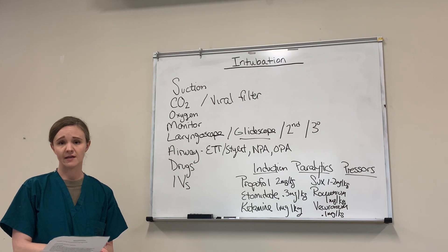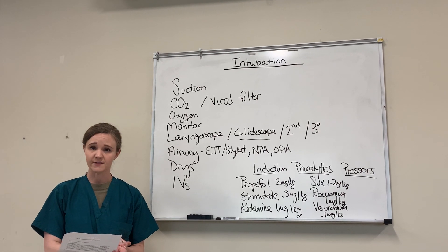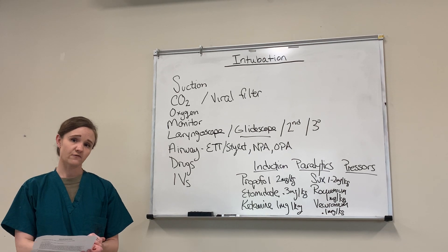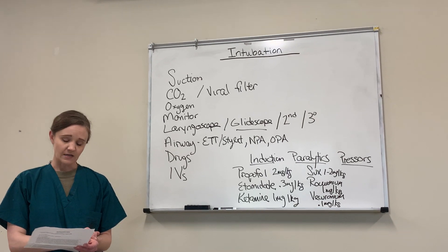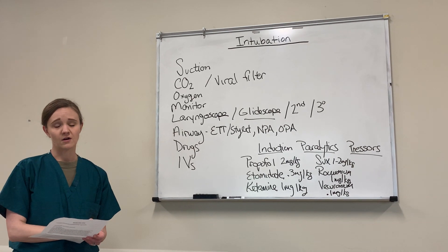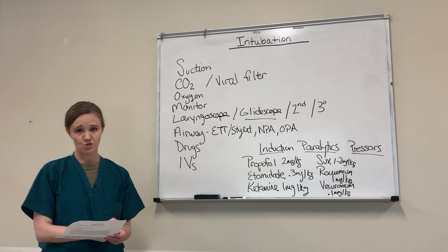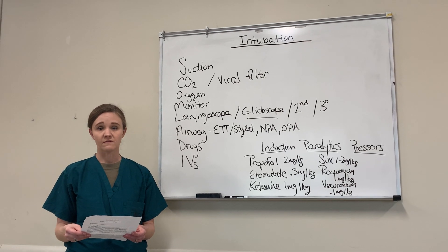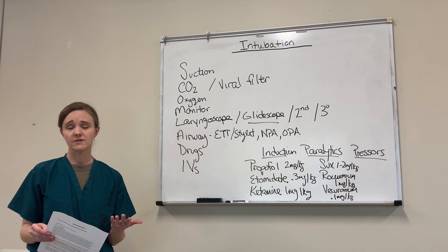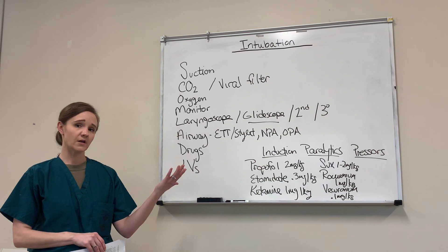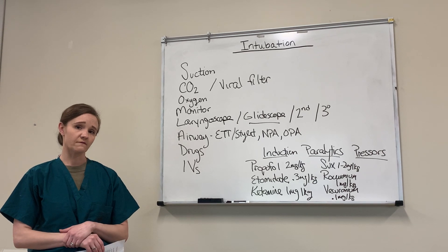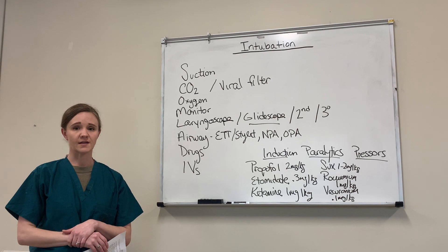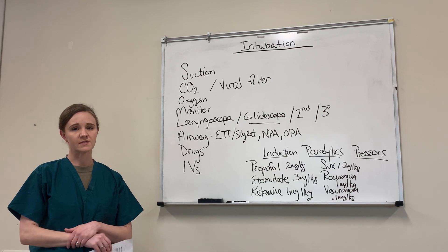After intubation: once the patient is successfully intubated and the physician inflates the ET tube cuff, listen to breath sounds bilaterally to ensure they're equal on both sides. Call outside the room for a chest X-ray, and have respiratory therapy check the ET tube cuff pressure. Also get restraints in place, because when the paralytics wear off the patient will likely start to move if sedation is not adequate.